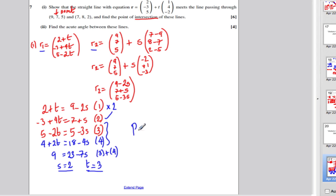The point of intersection is simply where you put, let's say, t is 3 into this line here. So it would be 2 plus 3 is 5, minus 3 plus 4 times 3, minus 3 plus 12 is 9, and 5 minus 2 lots of 3 is minus 1. Let's just check it would work with s is 2 in the other one. s is 2 here, 9 minus 4 is 5, 7 plus 2 is 9, and 5 take away 6 would be minus 1. So there's our point of intersection done.